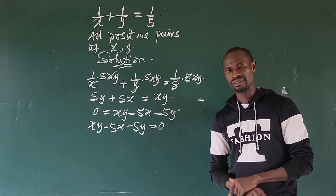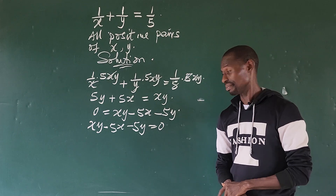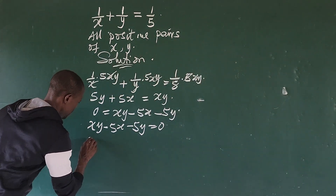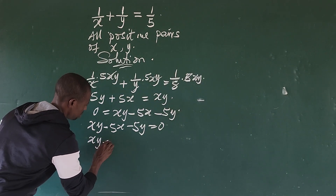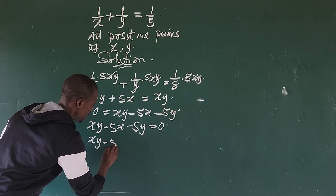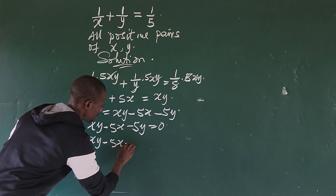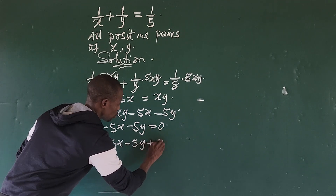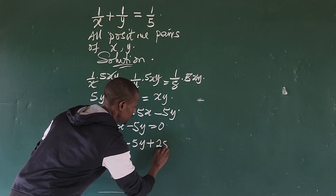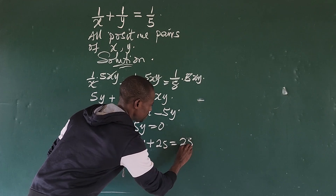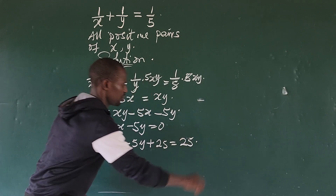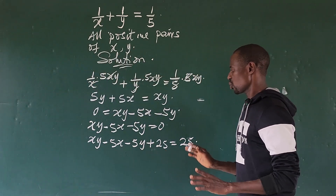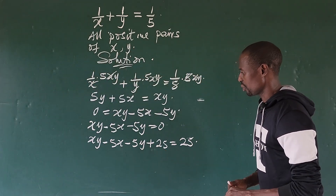Now let's add 25 to both sides of the equation. This gives us: xy minus 5x minus 5y plus 25 equals 25. There's a reason why we are doing this — the reason should become clear to you shortly.